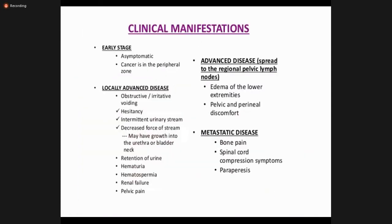In early stages, prostatic carcinoma is totally asymptomatic and found more in the peripheral zone. As it advances, urinary symptoms appear including obstructive hesitancy, intermittent urinary symptoms, retention of urine, hematuria, and renal failure. The most important metastasis is to bone — osteoblastic formation causing bone pain. It also causes spinal cord compression, and when spreading through regional pelvic lymph nodes causes pelvic pain and edematous lower extremities.